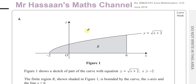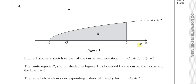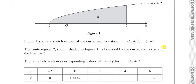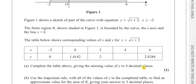This question tells us that figure one shows a sketch of part of the curve with equation y equals the square root of x plus two, where x is greater than or equal to negative two. The finite region R, shown shaded in figure one, is bounded by the curve, the x-axis, and the line x equals six. The table below shows corresponding values of x and y. We need to complete the table, giving the missing value of y to four decimal places, by substituting x equals four into the equation.